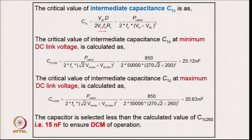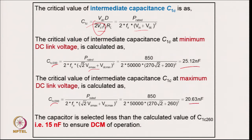For the intermediate capacitor design in DCM, a ripple of twice the average voltage across the capacitor is permitted for the boundary condition. For a supply voltage corresponding to one operating condition it comes to 25.12 nF, and for 260 V supply it is 20.63 nF. Selecting the lower of the two values and going even lower, 15 nF is selected to ensure DCM operation over the wide operating range.